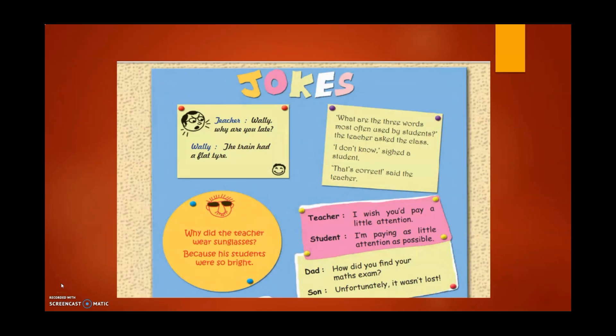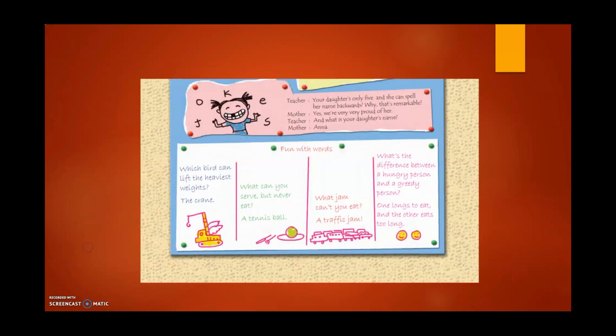Now we will see some of the wall magazine content put forth by standard 6th A. The first column we see is jokes. Most of the jokes here are made about teachers and students — a fun way of doing something for your class. The next thing they have done is fun with words. For example: which bird can lift the heaviest weights? The crane — referring both to the bird and the machine that lifts weight. So it is a fun way of understanding things.